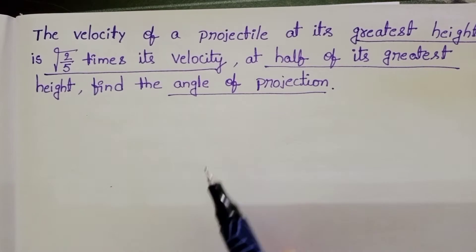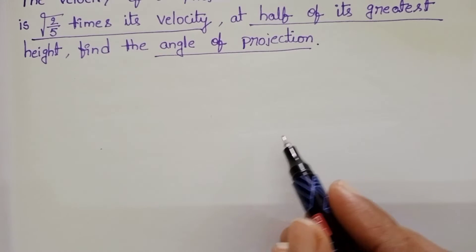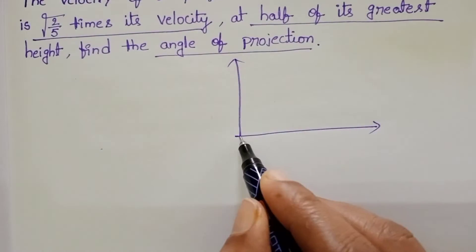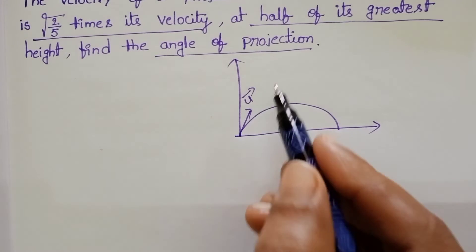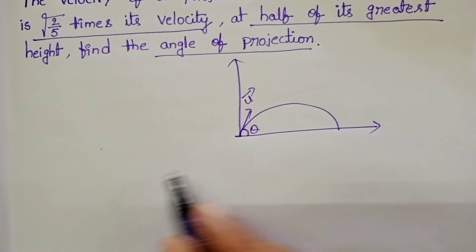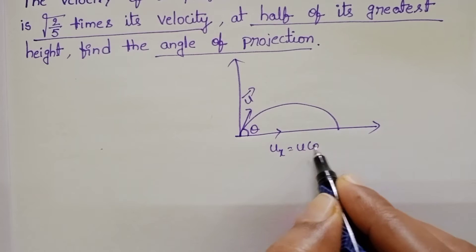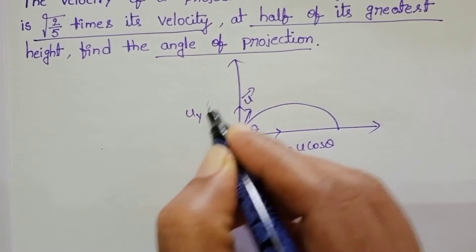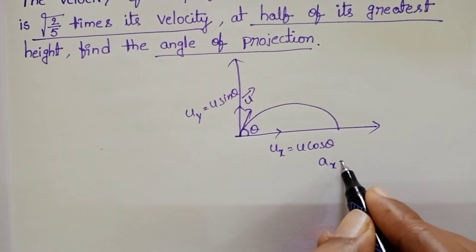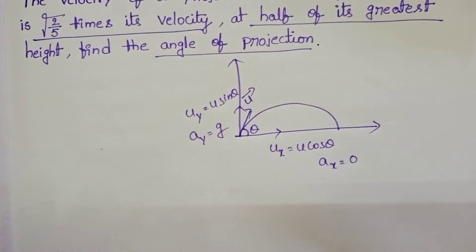To solve this question, first draw the diagram. Initially, a body is projected with initial velocity u at angle theta with the horizontal. The horizontal component of velocity ux equals u cos theta, and the vertical component uy equals u sin theta. Along the horizontal direction, acceleration is 0, but along the vertical direction, acceleration equals g.